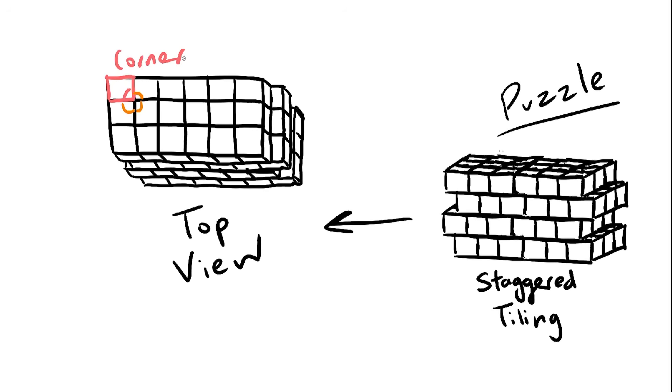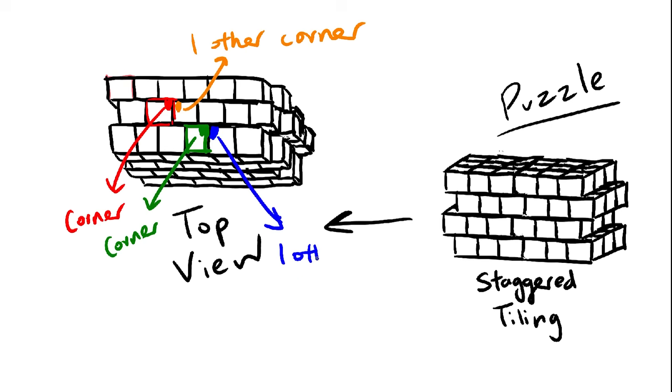But they're not completely staggered, as you can see. Each corner is still touching three other corners. I can stagger them even more so that now, each corner is only touching one other corner. Here's another example of how that works. This green corner only touches this blue corner. So here's the puzzle.